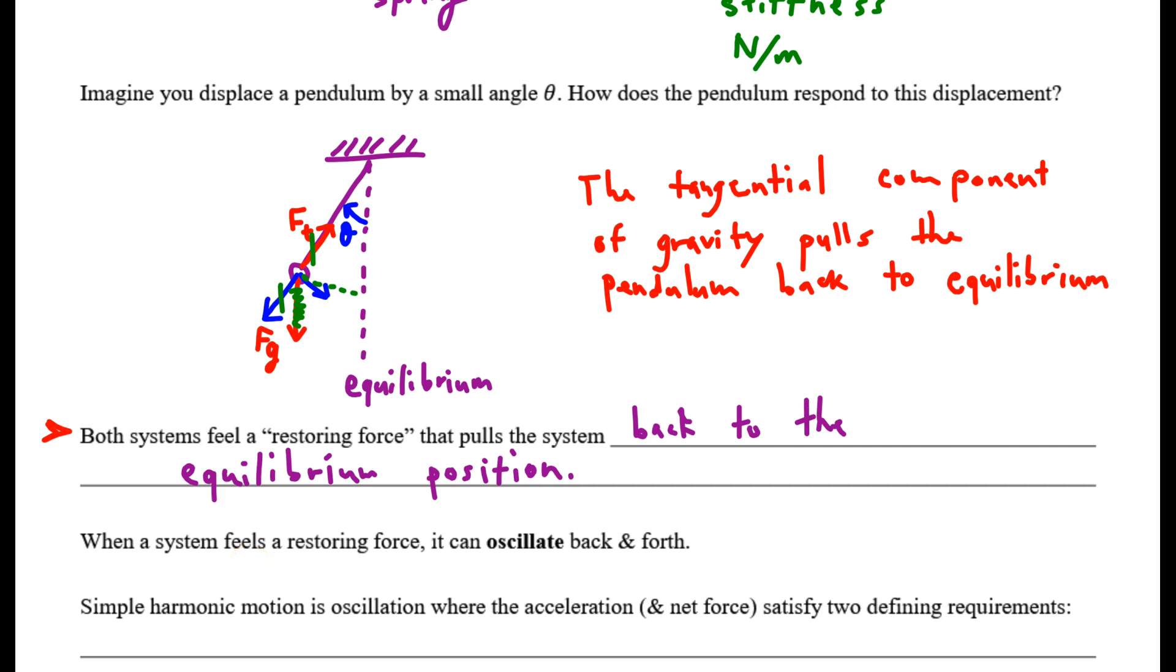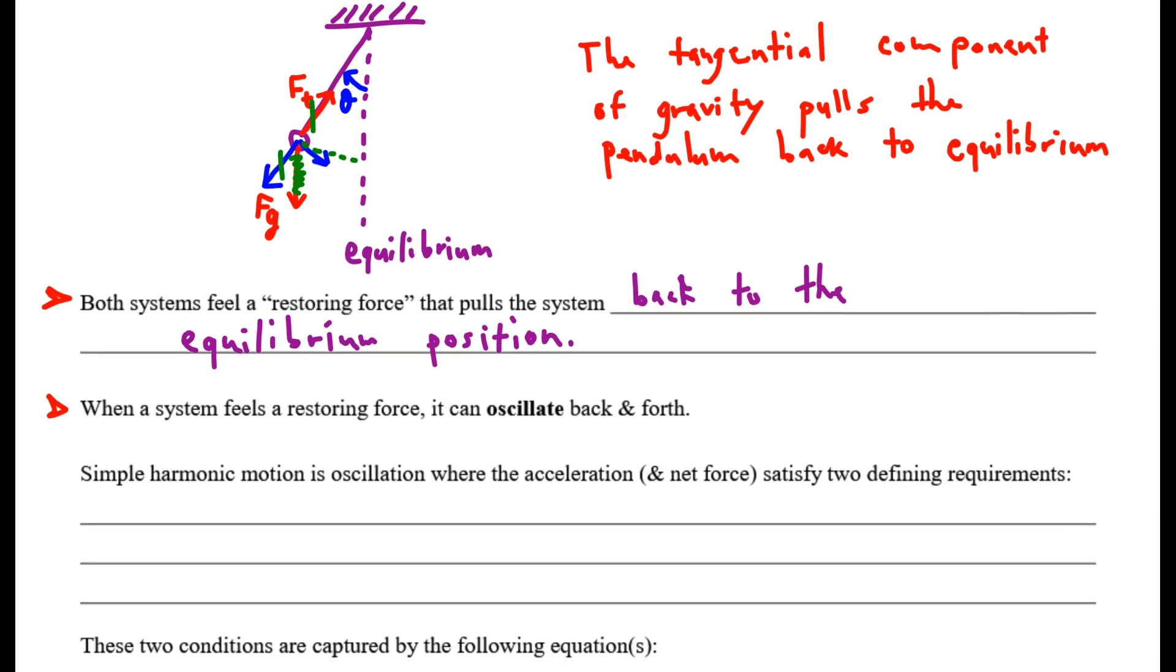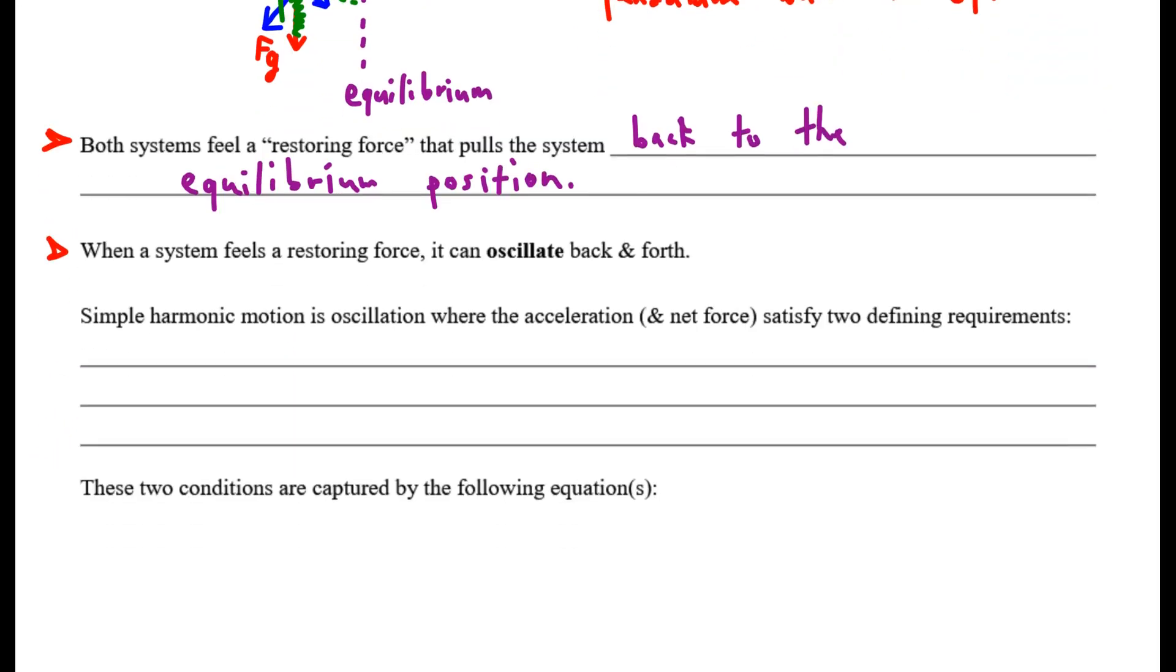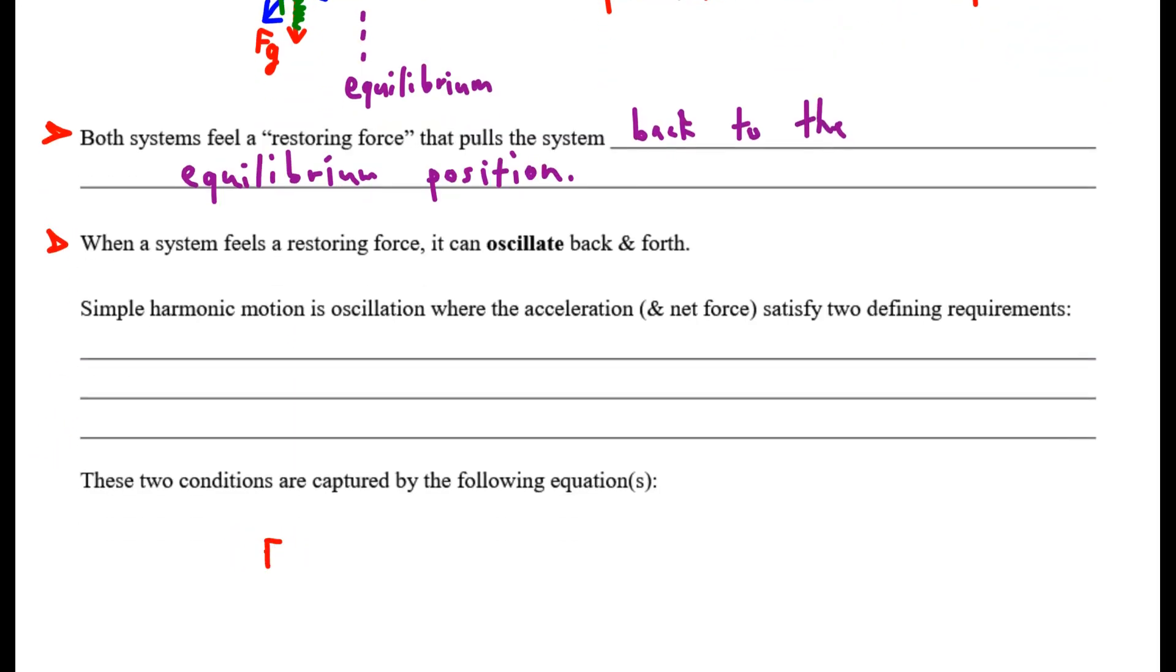So if you take that restoring force, whether it's gravity or the spring force, and you allow it to be F_net, the net force acting, which equals negative a constant times displacement, then if that restoring force is the net force, you will have the system oscillating back and forth. We call that simple harmonic motion.